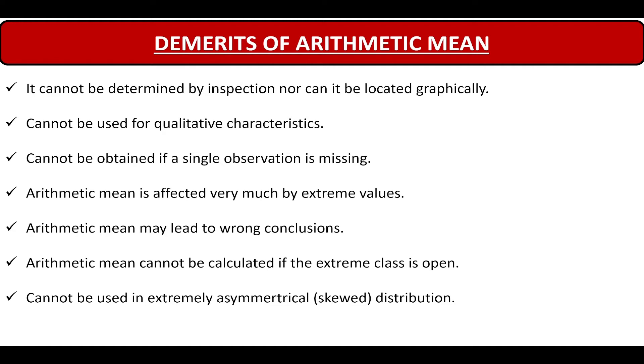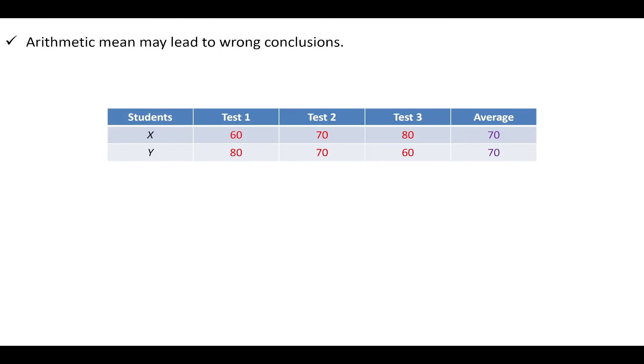Next, arithmetic mean may lead to wrong conclusions. What this means is, let us see a small example. If we have got two students, X and Y. X has scored 60 marks in the first test. After one month, he has scored 70 marks in the second test. And another one month, he has scored 80 marks in the third test. So, the average marks that he has scored is 70. Similarly, student Y has scored 80 in the first test. After one month, 70 and after one month, 60. And he has also scored a mean of 70. That means, both the students have gained or obtained 70 marks as an average.